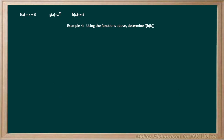Example 4 asks us to use the following functions to determine f of h of b. We start with our innermost function, h of b, using h of x equals x minus 5, replacing x's with b's. So h of b equals b minus 5. Now we exchange h of b in our original function with b minus 5.